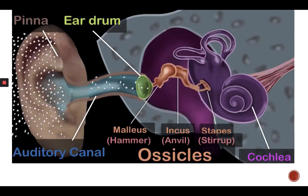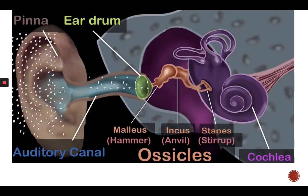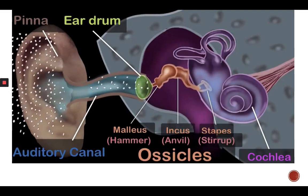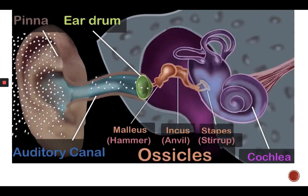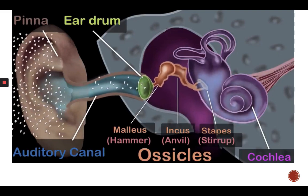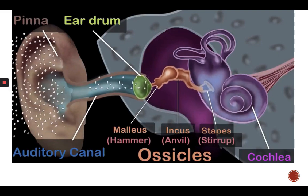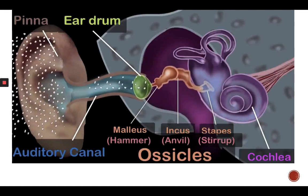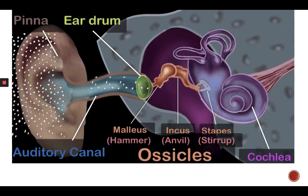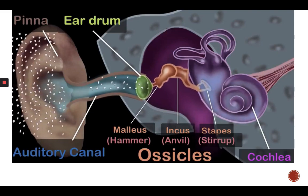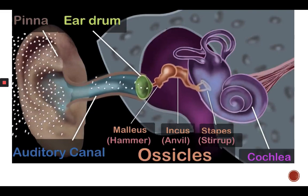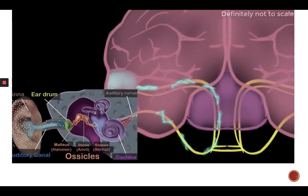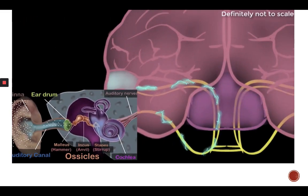As mentioned, the cochlea contains a liquid. When the stirrup hits the cochlea, this liquid starts vibrating. There are specialized cells in the cochlea that convert these vibrations into electrical signals. These electrical signals travel through the auditory nerves all the way to your brain, where they are finally interpreted as sound.